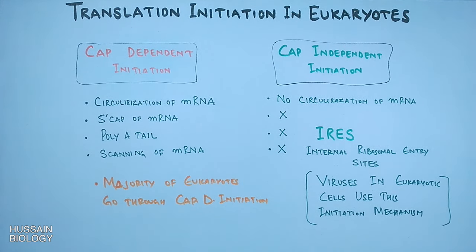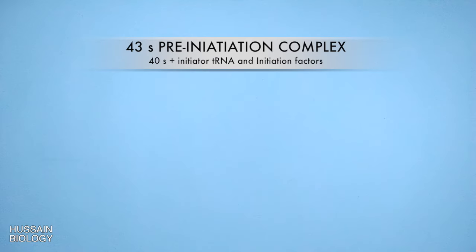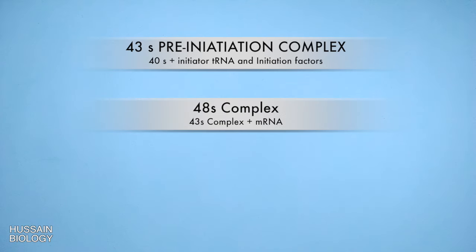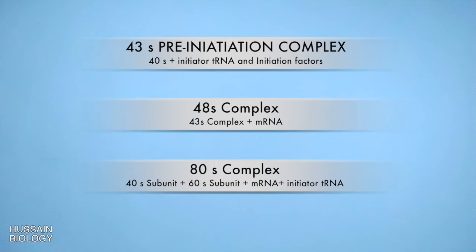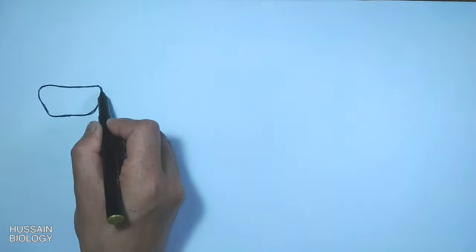Now let's get to the detailed mechanism of translation. First we get the formation of the 43S complex — the combination of the 40S subunit plus initiation factors plus initiator tRNA. Then we get the formation of the 48S complex, which is the 43S complex plus bound mRNA. Ultimately we get the formation of the 80S ribosome, comprising the 40S subunit along with the 60S subunit and mRNA.